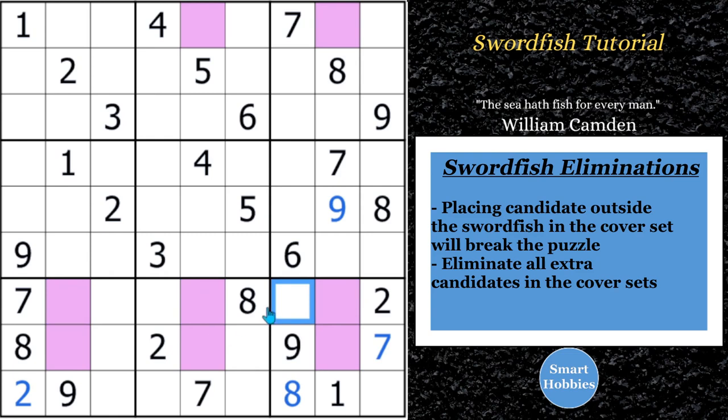And so how the swordfish works is you can eliminate all the extra threes that would be along row one. So this three right here, this three right here, you can eliminate. This three right here, you can eliminate. And here and here, you already have three, so you can eliminate those. And then you can eliminate a three from right there. So that's how the swordfish strategy works.